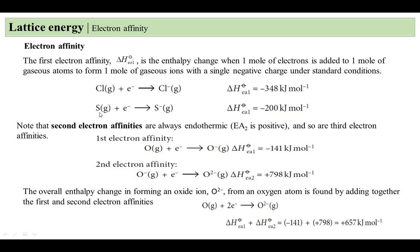For the second electron affinity, if we start from sulfur and add an electron to the gaseous atom to form the ion, it is worthy to note that second electron affinities are always endothermic — always positive values — while first electron affinities are always exothermic. We will see in an exercise why second electron affinities are positive.